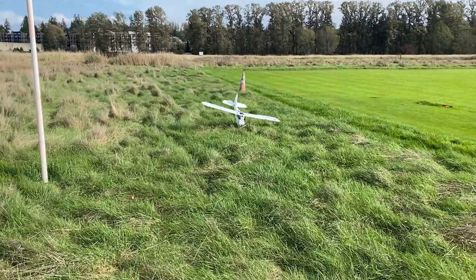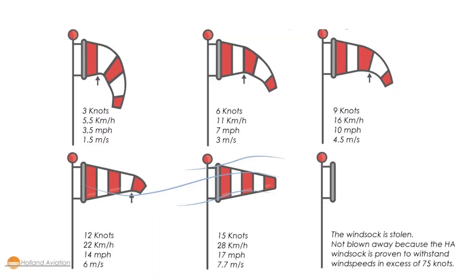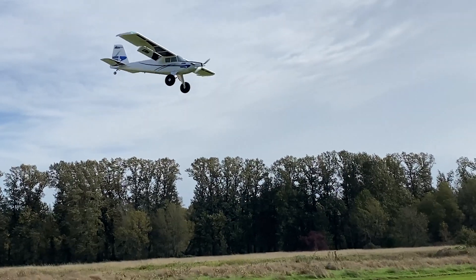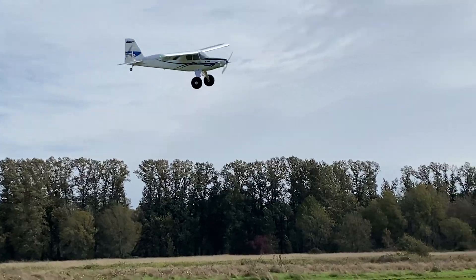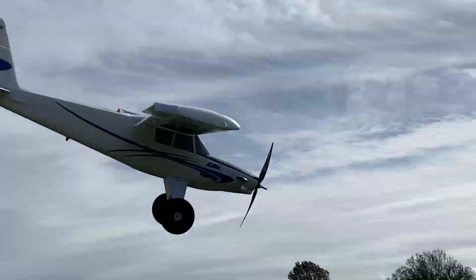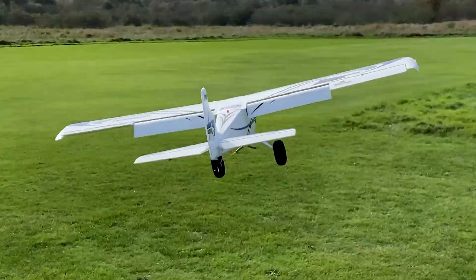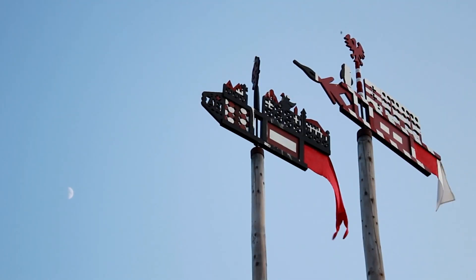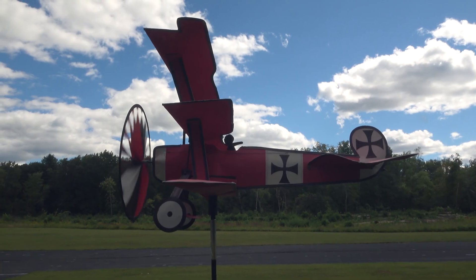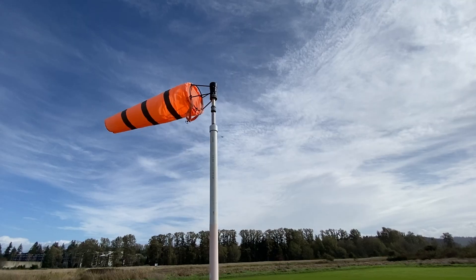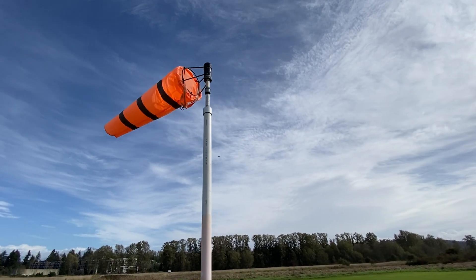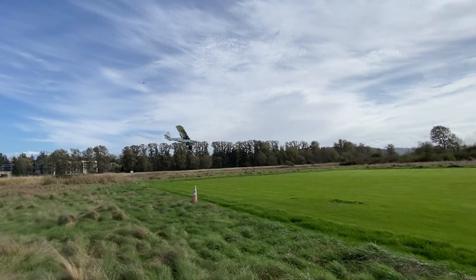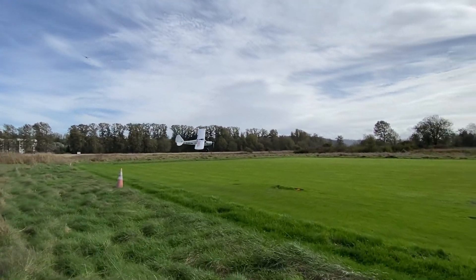Most windsocks are calibrated in the full-scale world, meaning they can tell you how strong the wind is based on how far out they're sticking. 90 degrees generally equates to 15 knots or greater of wind. This isn't always the case with RC windsocks, but you can still gauge the conditions based on the same idea. Some folks even use household yard wind decorations shaped like airplanes — whatever you use, your wind reading device is only as useful as your ability to read it.